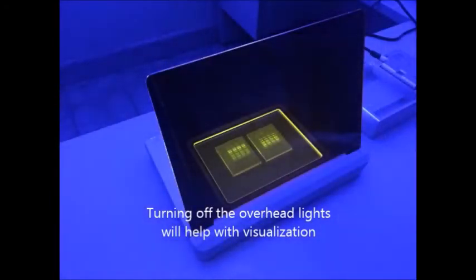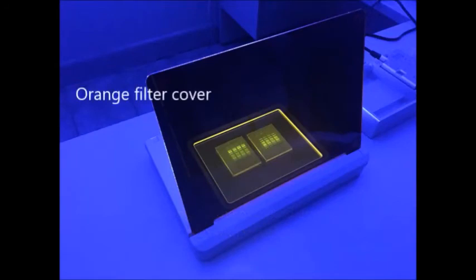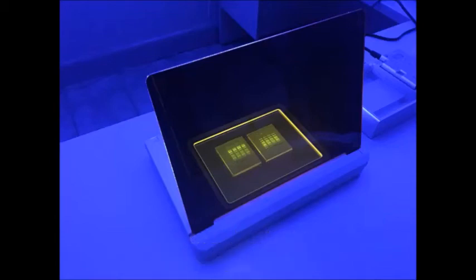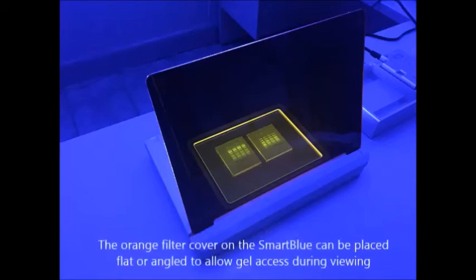The blue light excites the Smart Glow stain that has been attached to the DNA molecules. The orange filter cover on the illuminator blocks the blue light and allows us to clearly view the fluorescing DNA bands. The orange cover can be placed flat on top of the viewing surface or angled to allow access to the gels.